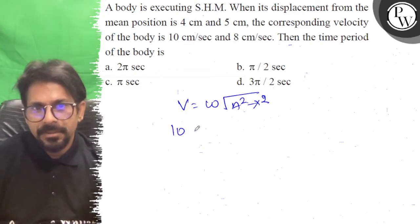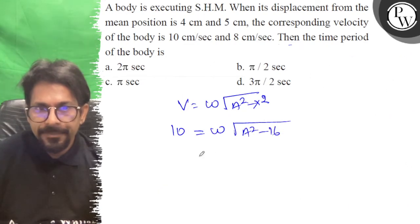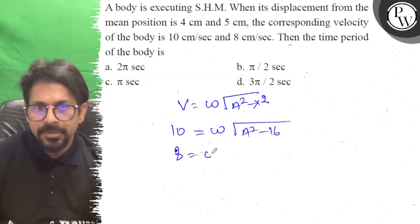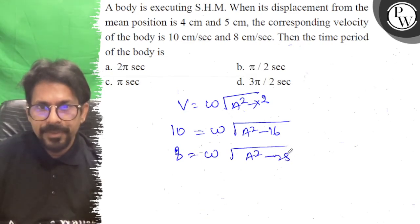So v1, which is 10, corresponds to x equals 4: omega root of A squared minus 16. And v2, which is 8, corresponds to x equals 5: omega root of A squared minus 25.